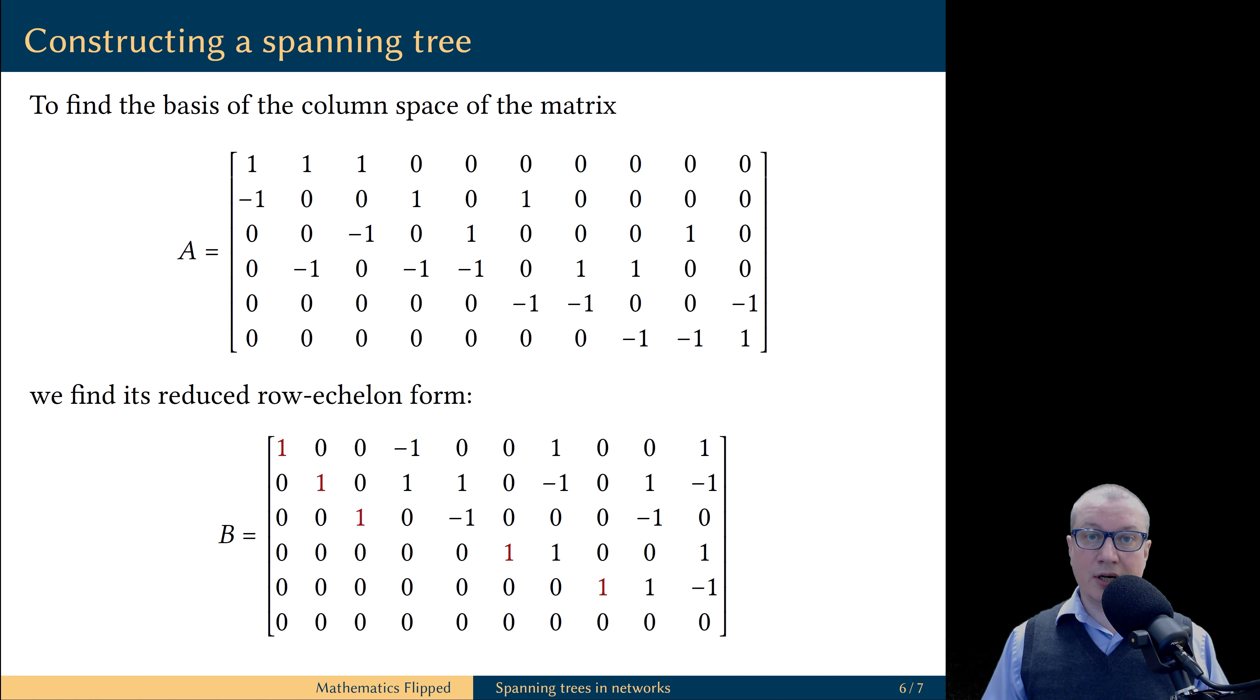The non-pivot columns are the ones that would correspond to the three variables in the homogeneous linear system. And they are the ones that contribute elements to the null space of the matrix. There are five non-pivot columns in the reduced row echelon form matrix B.